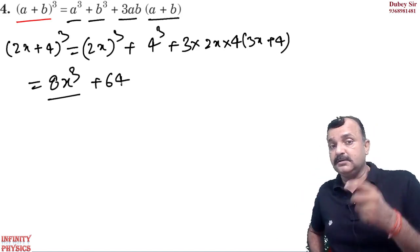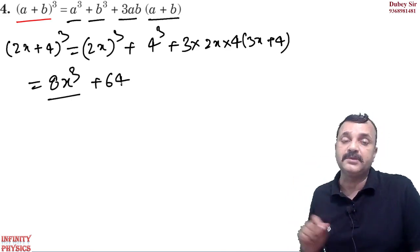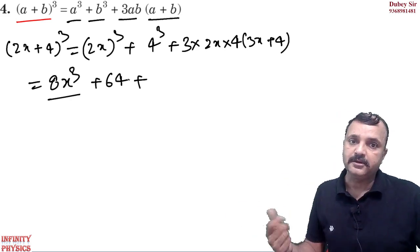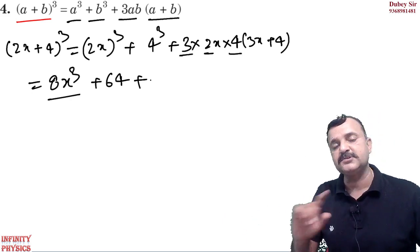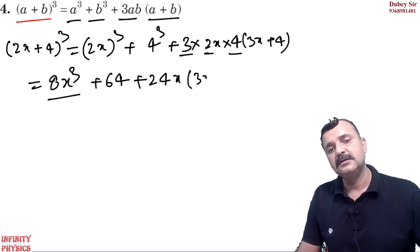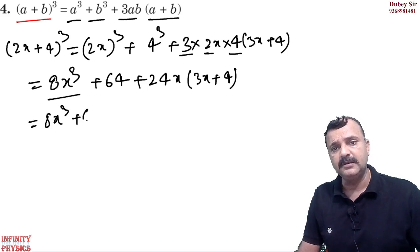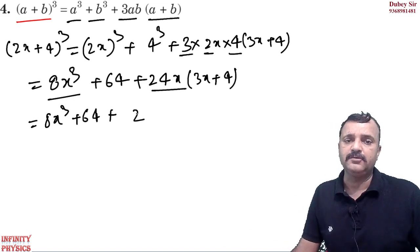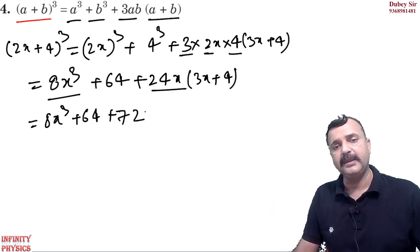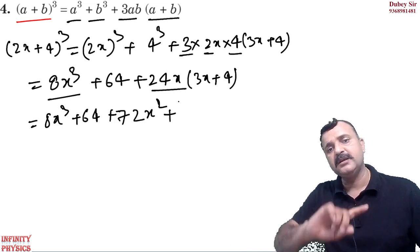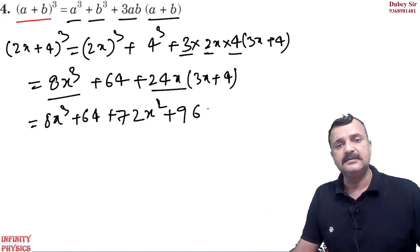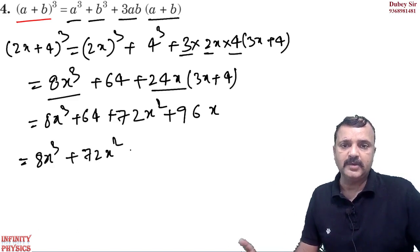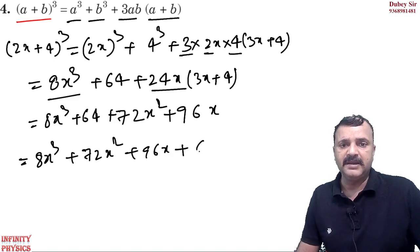(2x)³ means 2³ = 8, so 8x cube. 4³ = 64. Then 3 into 2x into 4 = 24x, and that multiplies by (3x + 4). Simplify to get 8x cube plus 64 plus 24x(3x + 4). Final simplified answer: 8x³ + 72x² + 96x + 64.